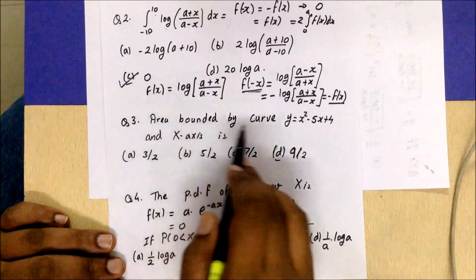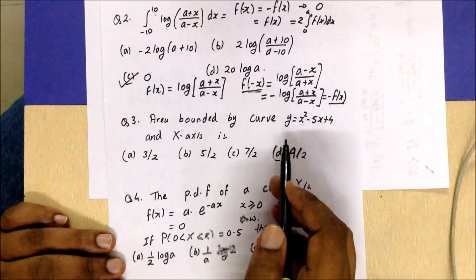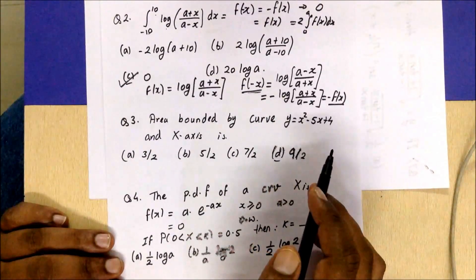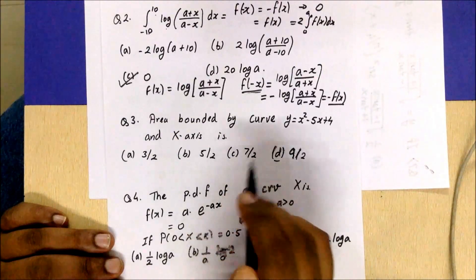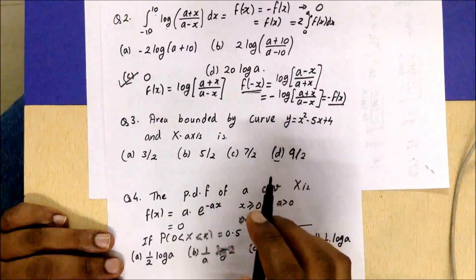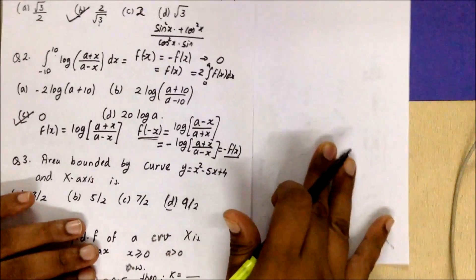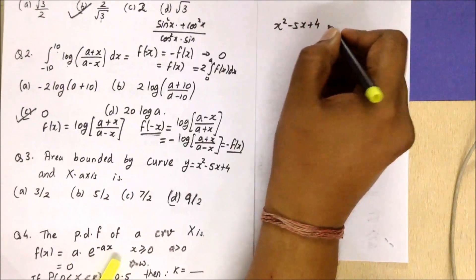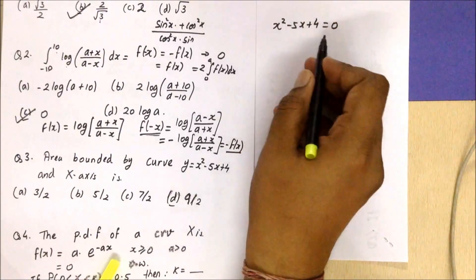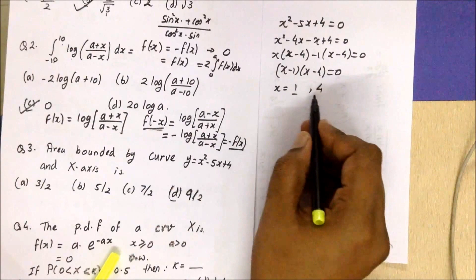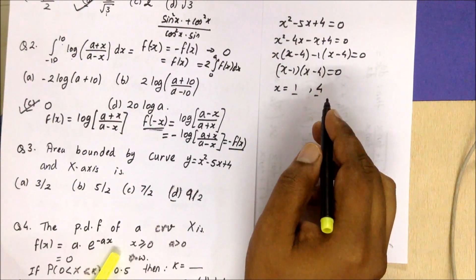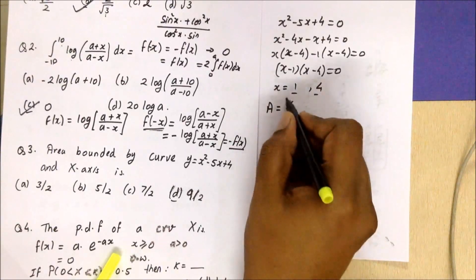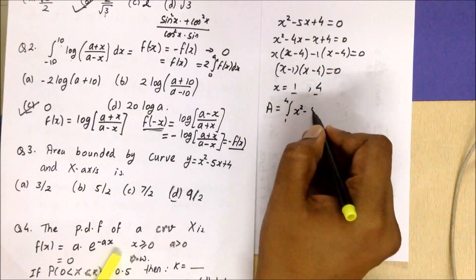Moving to the next question: area bounded by the curve y = x²−5x+4 and the x-axis. Since it is the x-axis, the integration is ∫f(x)dx from a to b. We don't know the values of a and b, so we find the roots of x²−5x+4 = 0 by setting y = 0. The lower limit is 1 and upper limit is 4. The area equals the integral from 1 to 4 of (x²−5x+4) dx.